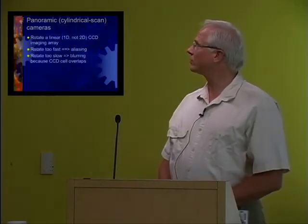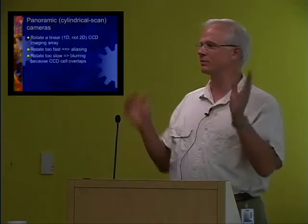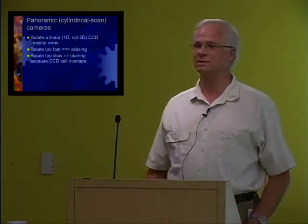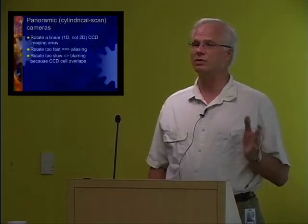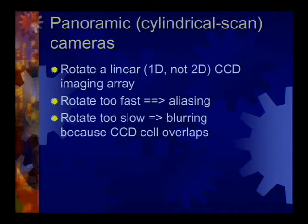Panoramic cameras use a one-dimensional array arranged vertically, sweeping 360 degrees around the scene. Moving things get blurred out due to the sweep time. If you rotate too fast — sampling every 90 degrees — you get aliasing. Too slow and you blur things. You need a good quality lens, preferably with a large aperture, to capture the highest possible resolution information.